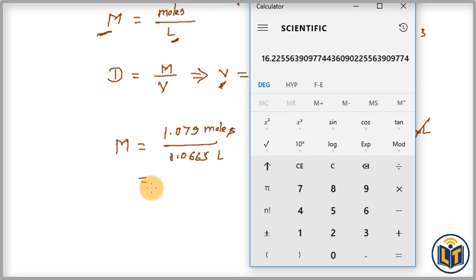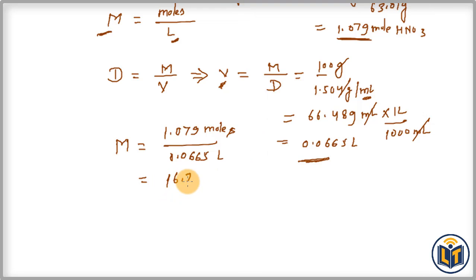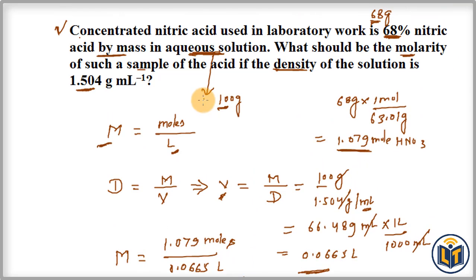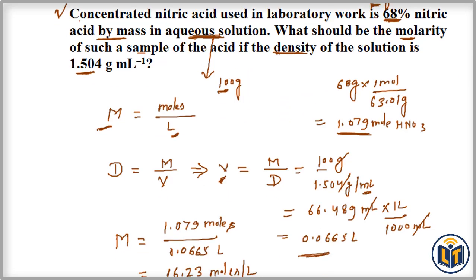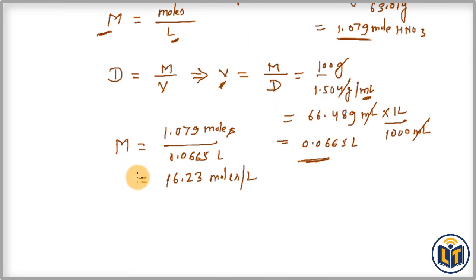You can round out this figure as well. You can write this value in two significant figures because we write the answers with the least significant figures. Then it is going to be 16 moles per liter.